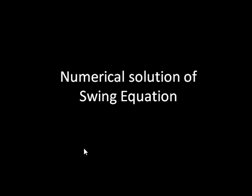Two methods are discussed in the syllabus: the step-by-step method and the Runge-Kutta method. In the step-by-step method, you find the solution for delta with time in a step-by-step manner. You start with initial values of delta and power, then calculate future values of delta, ultimately building the swing curve step by step while tracking time.